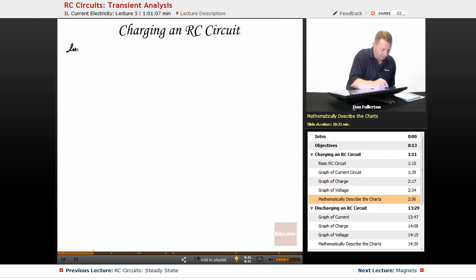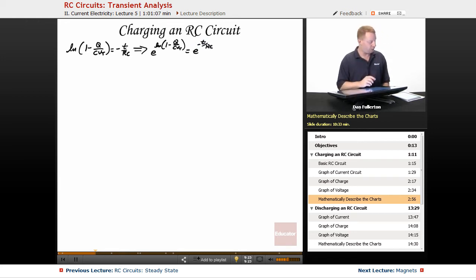All right, we have the log of 1 minus q over c vt equals minus t over rc. This log is troubling. How do we get rid of a log? We take e and raise it to that power. So e to the log of 1 minus q over c vt is what we're going to do. Raise both sides to that. So e to the log of 1 minus q over c vt must be equal to e to the minus t over rc, doing the same thing on both sides to maintain that equality. E to the log of something is just that something. So our left hand side gets a little simpler. We have 1 minus q over c vt equals e to the minus t over rc. All right, well, let's see if we can't get rid of that 1 on that side and do a little bit of rearrangement to say that q over c vt equals 1 minus e to the minus t over rc.